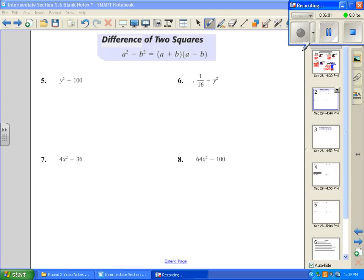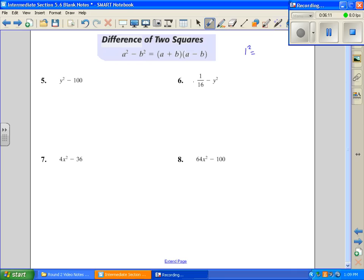This next section, we're going to be talking about difference of 2 squares. It's one of our special products. Now, when we're talking about 2 squares, we're talking about perfect squares. Let me just take one second. 1 squared is 1, 2 squared is 4, 3 squared is 9, 4 squared is 16, and 5 squared is 25. That should be plenty enough. So, these are called perfect squares.